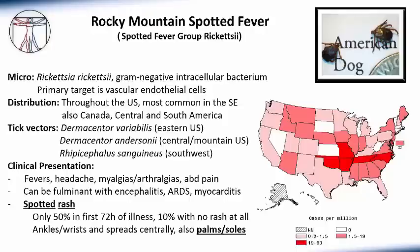The distribution of this disease is throughout the United States, but most commonly found in the Southeast — in particular North Carolina and Oklahoma, which tend to be the top two states where this disease is found from year to year.